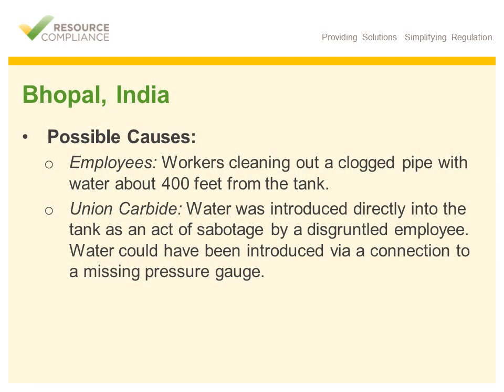In any incident, it is important to ask what were the contributing causes. In the case of the Bhopal accident, there are conflicting root causes. Employees interviewed shortly after the event claimed that workers cleaning out a clogged water pipe in proximity to the tank accidentally introduced water into the tank. Union Carbide claims that would have been impossible, and instead believes that water entered the tank as a direct act of sabotage by a disgruntled employee who used a connection to a missing pressure gauge to introduce water into the tank.